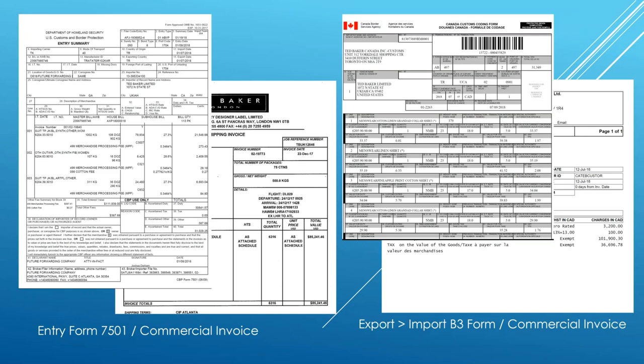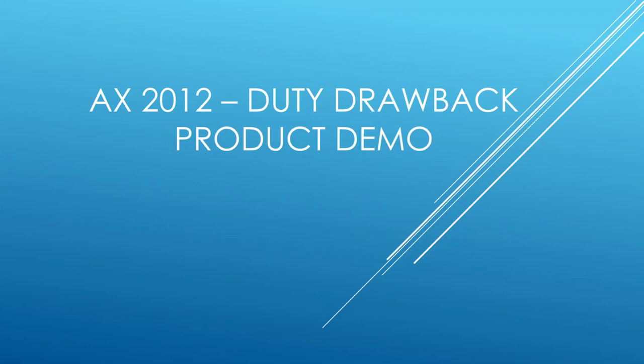CBP also requires you to provide your entry summaries or commercial invoices. When you bring merchandise into the U.S., it's called the entry form 7501. They may audit you and ask to see this data, but there's the ability to link that to the documents in this format. This is an example of a B3 document, which is the import document into Canada and the commercial invoices associated with it. When audited by CBP, they'll ask for the file format you sent them and the supporting entry forms and export forms. Now let's get right into the product demo to see how AX2012 does this.